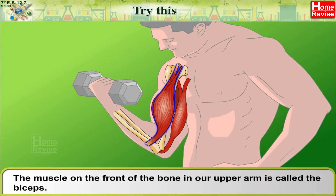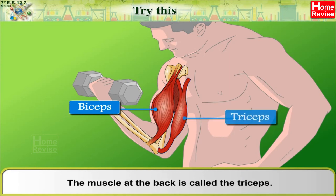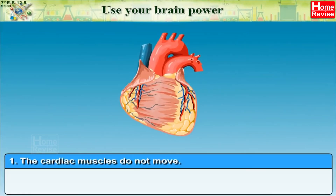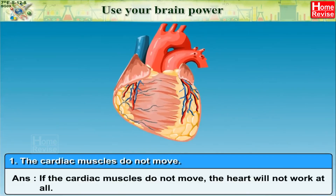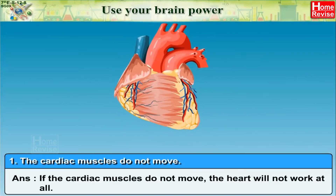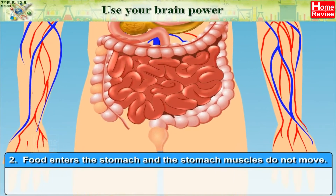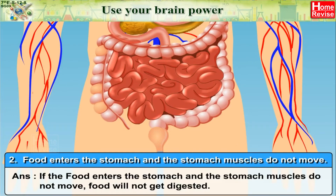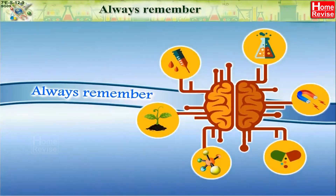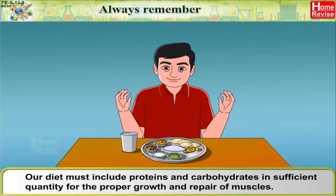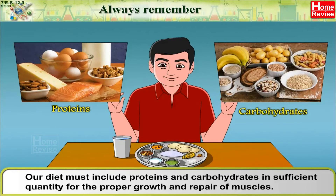The muscle on the front of the bone in our upper arm is called the biceps. The muscle at the back is called the tricep. Use your brain power: If the cardiac muscles do not move, the heart will not work at all. If food enters the stomach and the stomach muscles do not move, food will not get digested. Always remember, muscles of our body must be strong and efficient. Our diet must include proteins and carbohydrates in sufficient quantity for the proper growth and repair of muscles.